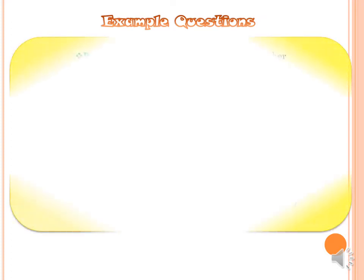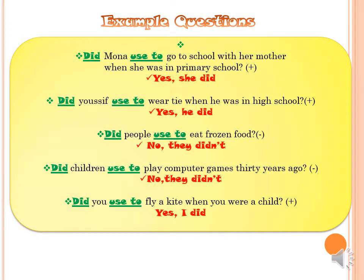Look at the example question: Did Mona use to go to school with her mother when she was in primary school? The question starts with 'Did', followed by Mona as the subject, then 'use to', then the infinitive 'go'. The answer is a yes/no answer: 'Yes, she did' or 'No, she didn't'. Now you can read the other questions.